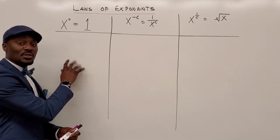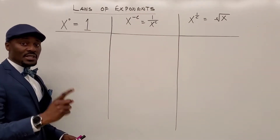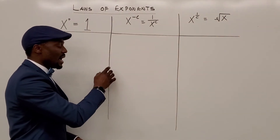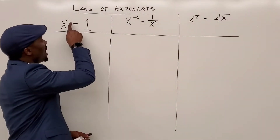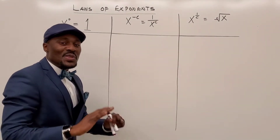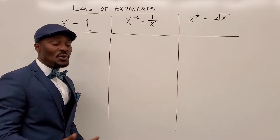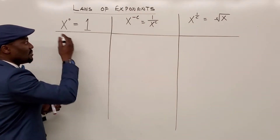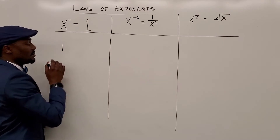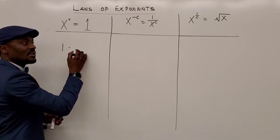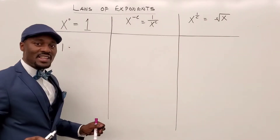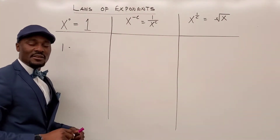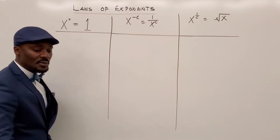I talked about this in video number two, where I said any number raised to power zero is equal to one. I explained it as basically saying you have one and you want to multiply it — but don't multiply it, because there's nothing there that tells you the number of times. So you just leave the one. This means multiply one by x how many times? If you don't write anything, it means no times, and that leaves you with one. That's the reasoning behind x to the power of zero being equal to one.